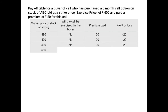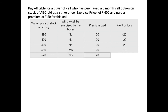If the market price is 510, he's got a right to buy the stock at 500, so he's going to exercise the option. He procures the stock at 500 and immediately sells it in the market at 510, making a profit of 10. But he's paid a premium of 20, so the net result is a loss of minus 10. If the market price is 520, he buys at 500 and sells at 520, making a profit of 20, but he's paid a premium of 20 — so his profit or loss is zero.